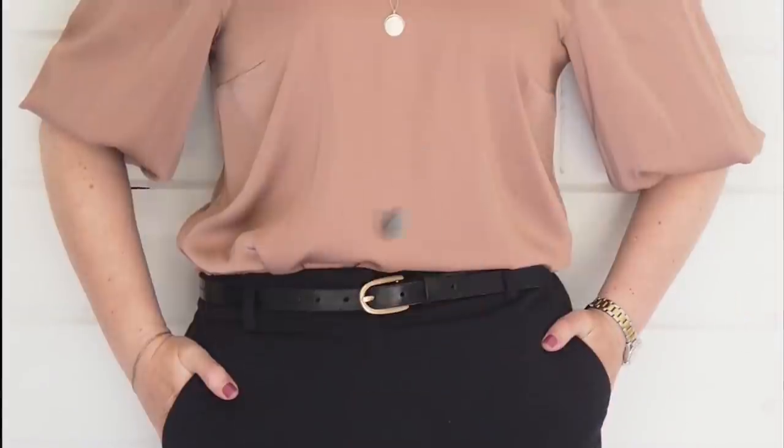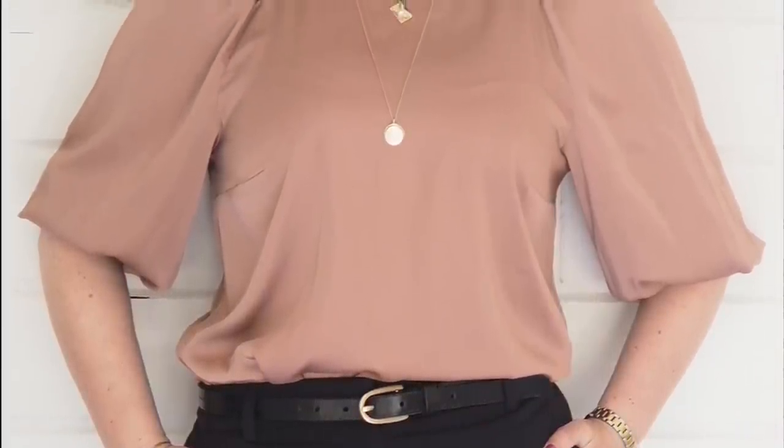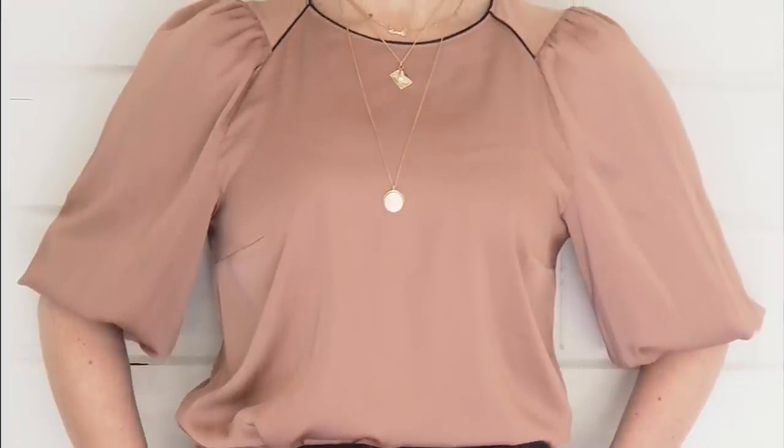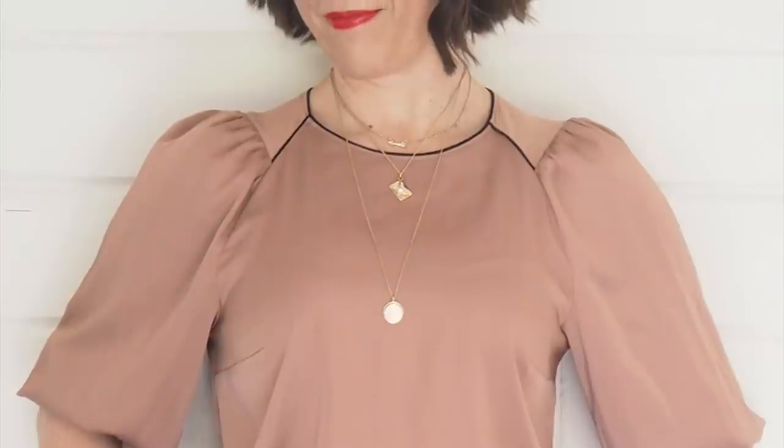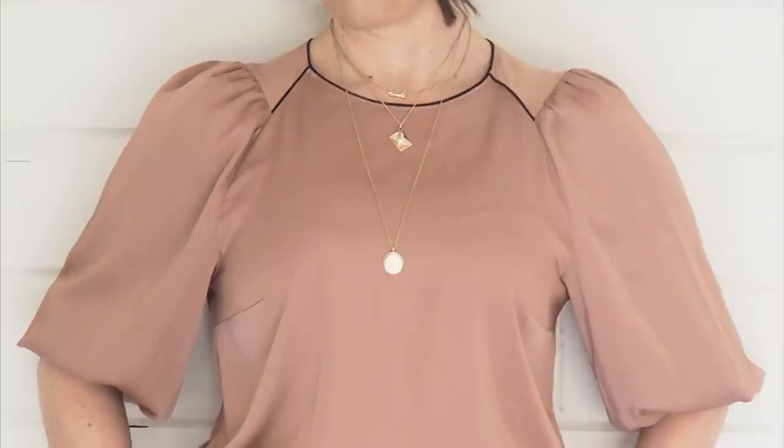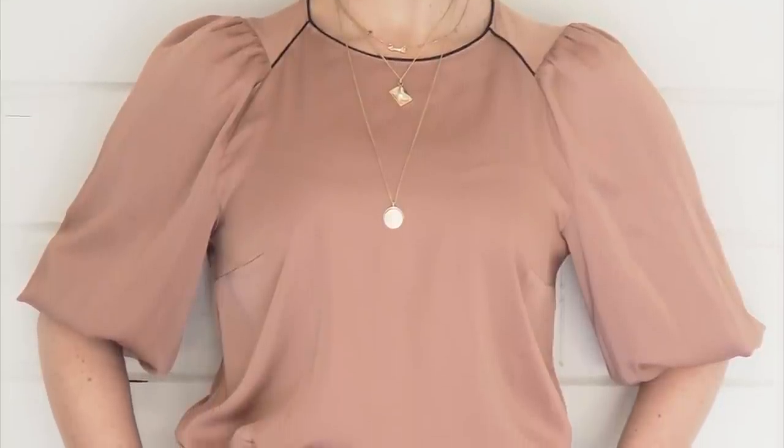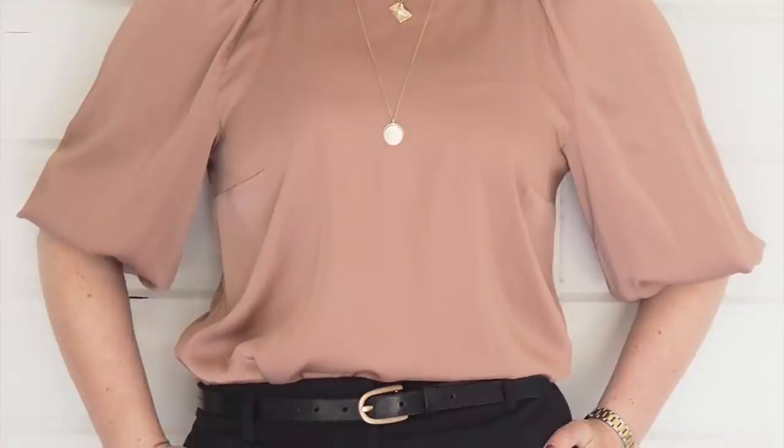And then for my last example, this is actually the top I'm wearing today. So the base of this one is the raglan block. Again, I've moved that shoulder dart to the side seam, but this time I've omitted the waist dart. So three examples of three very different looking garments, all using exactly the same technique, repositioning a dart.